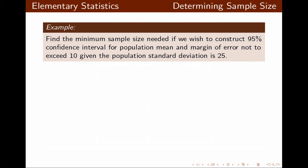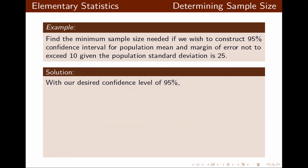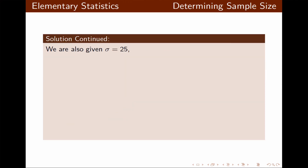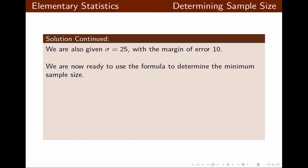We want to find the minimum sample size needed if we wish to construct a 95% confidence interval for the population mean, with margin of error not to exceed 10, given the population standard deviation is 25. With the confidence level of 95%, we find the critical value using inverse norm with the left area of 0.975; our critical value is 1.960. We were given sigma equal to 25 and margin of error equal to 10. Applying these values to our formula for sample size.